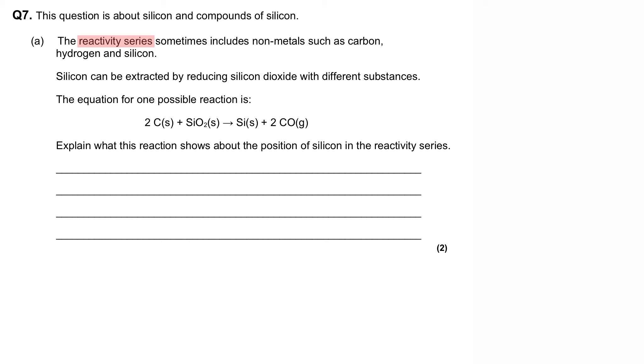Silicon can be extracted by reducing silicon dioxide with different substances, and the equation for one possible reaction is shown here, where two carbon in the solid state reacts with silicon dioxide in the solid state, and produces silicon in the solid state, and two carbon monoxide in the gas state.